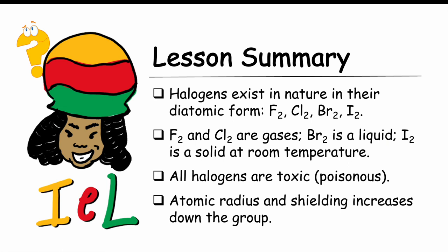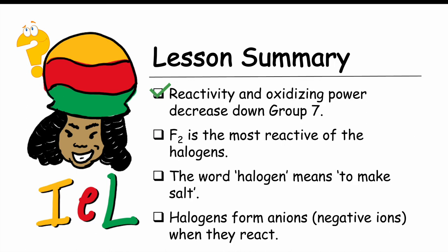Here are the summary points for this lesson. Halogens exist in nature in their diatomic form: F2, Cl2, Br2, I2. Fluorine and chlorine are gases; bromine is a liquid; iodine is a solid at room temperature. All halogens are toxic — they are poisonous. Atomic radius and shielding increase down the group. Reactivity and oxidizing power decrease down Group 7. Fluorine is the most reactive of the halogens. The word halogen means to make salt. Halogens form anions — those are negative ions — when they react.